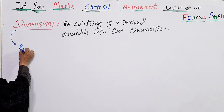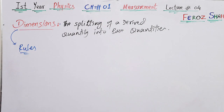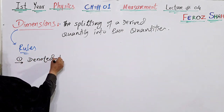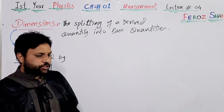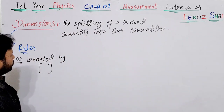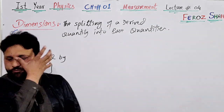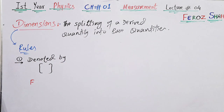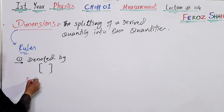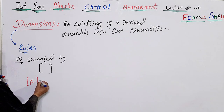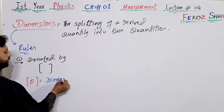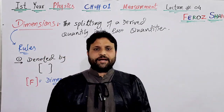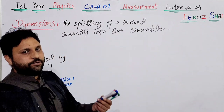Dimensions possess several rules. The first rule is that dimensions are denoted by square brackets. If you want to find the dimension of force, you put force in square brackets. For example, if F means force, putting F in square brackets means the dimensions of force.